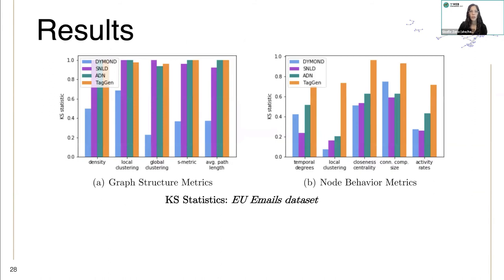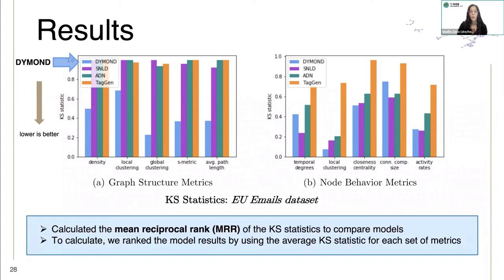Here we show the results for the EU emails data set with the graph structure and node behavior. We show the KS statistic where lower value is better, and our model Diamond is the light violet color here. Diamond clearly performs the best on the graph structure metrics, but in the node behavior metrics, it's not as clear. So to compare the models more easily, we calculate the mean reciprocal rank using the average KS statistic for each of these two sets of metrics.